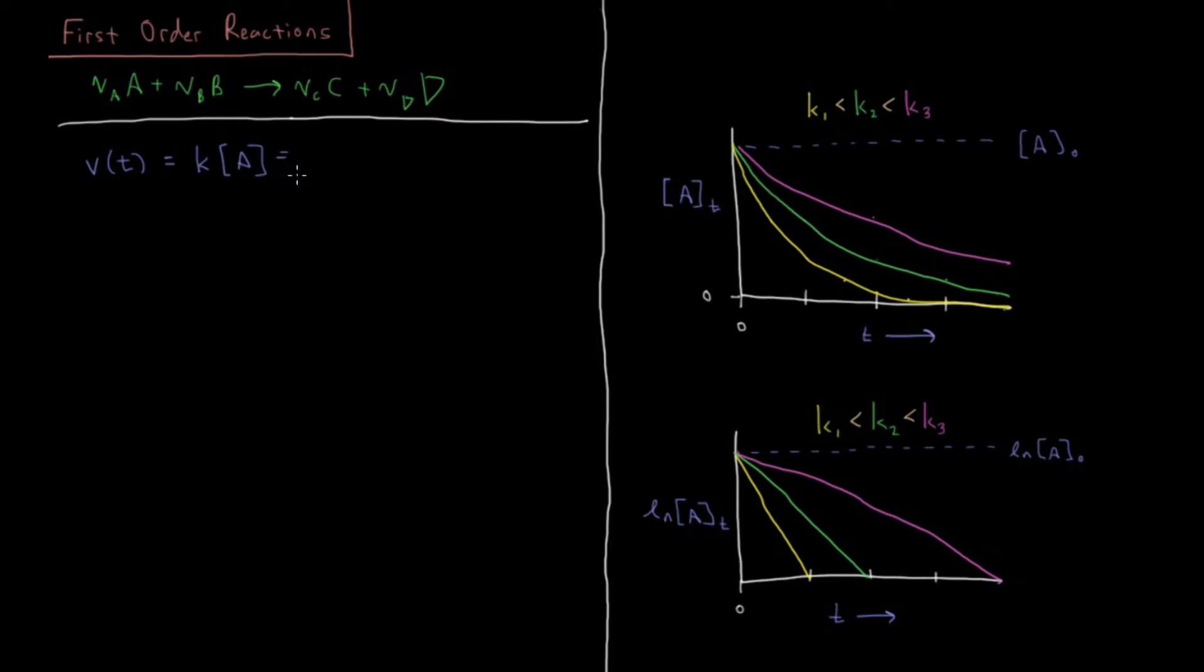According to the definition we had for our rate of reaction from previous videos, this is equal to negative one over stoichiometric coefficient of A times the derivative of the molarity of A, the concentration of A with respect to time. For the sake of this video we're just going to assume that this is one for the sake of simplicity.